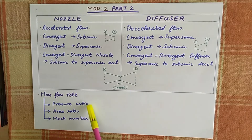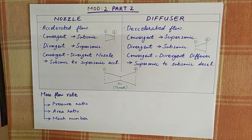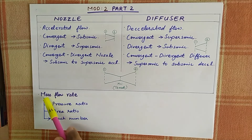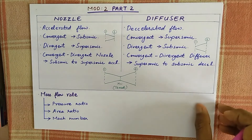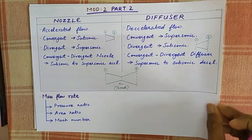In terms of pressure ratio, area ratio, and Mach number, we derive the mass flow rate in terms of Mach number.